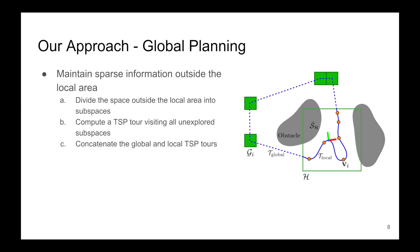At the global level, the space outside the local planning horizon is divided into subspaces. For all the subspaces that contain unexplored areas, we plan a TSP path among them to determine the visiting order. After that, we concatenate the local path and the global path to form the overall exploration path.